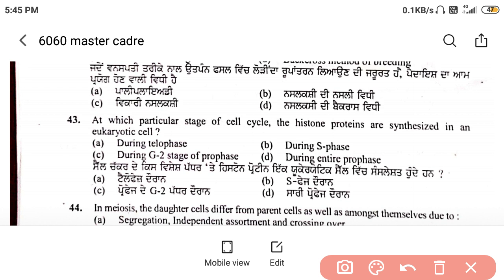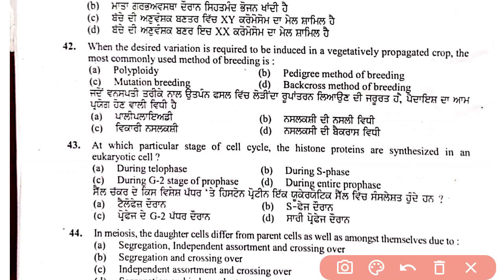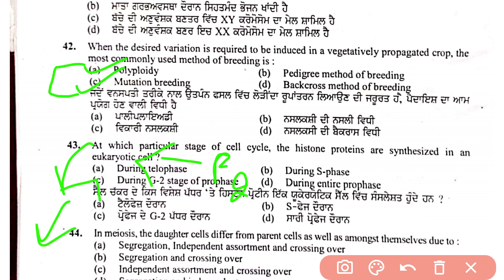Question 42: when a desired variation is required to be induced in a vegetatively propagated crop, the best method for plant breeding would be the pedigree method.